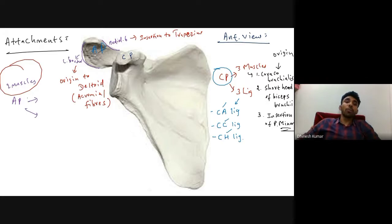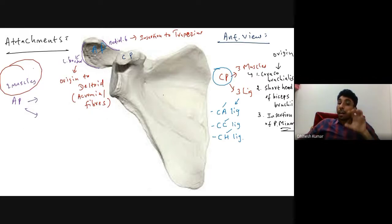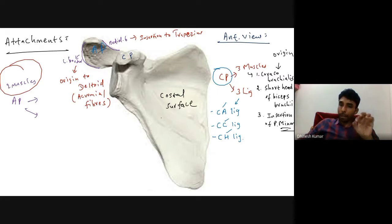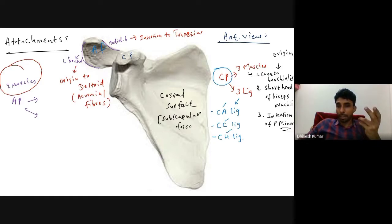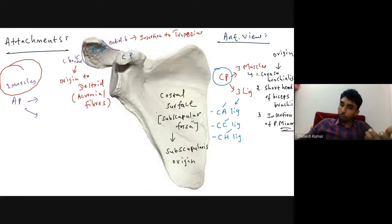The muscle originating from the costal surface of the scapula: the costal surface is otherwise known as the subscapular fossa — 'fossa' meaning depression. So the muscle arising from this area is the subscapularis muscle, originating from the subscapular fossa, which is the costal surface of the scapula.